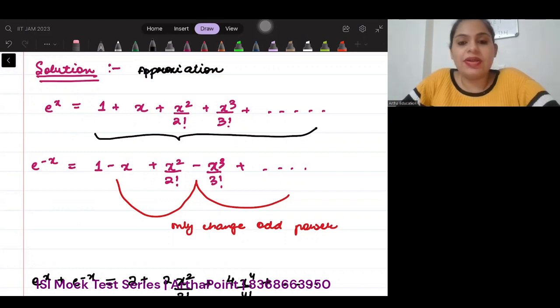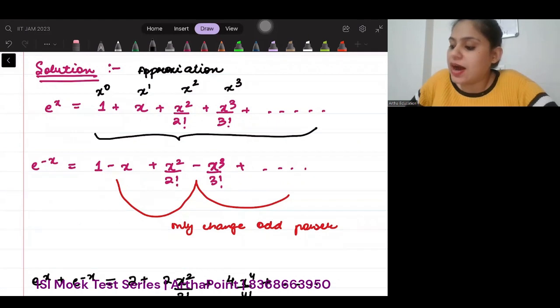So, what is going to happen? Wherever I see my odd power, like x to the power 0, this is x to the power 1, this is x to the power 2, x to the power 3 and so on. So, wherever I see odd power, I am going to plug a negative sign.